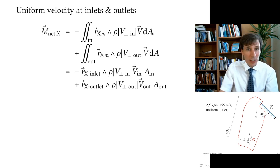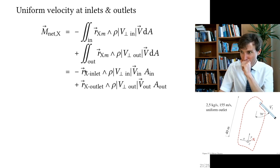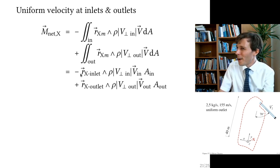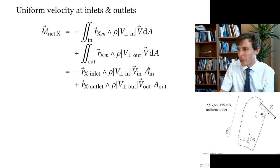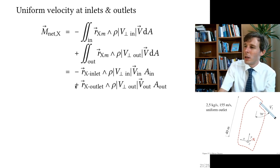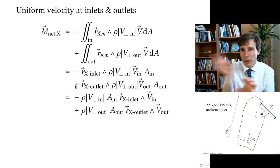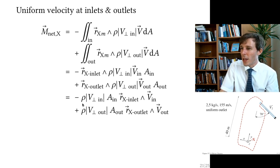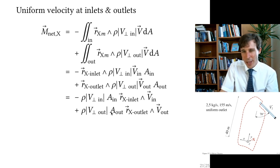We are left with the cross product of r and the velocity, multiplied by area — with a minus sign for the inlet and plus for the outlet. Rearranging: ρ·v_⊥·A at the inlet times the cross-product position vector, and ρ·v_⊥·A at the outlet times the cross-product position vector.